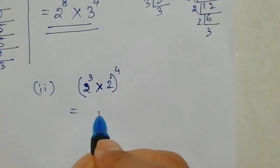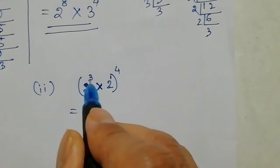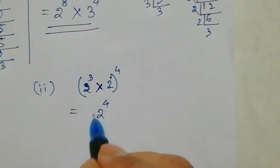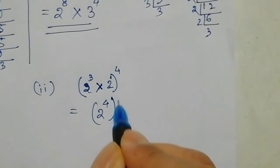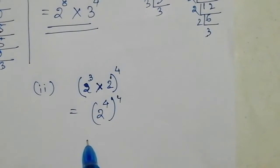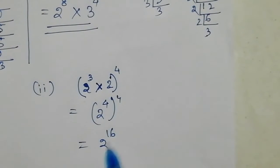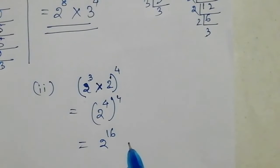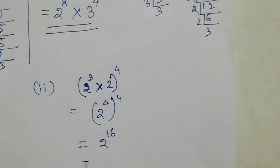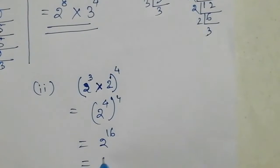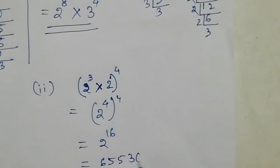4, 4. 2 to the power 4 is 16. 2 to the power 16 is 65536.